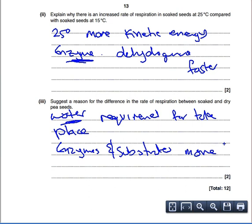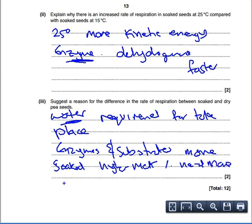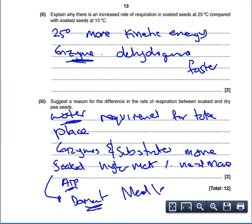Also consider the difference in metabolic state: soaked or germinating seeds have a higher metabolism and therefore need more ATP. Conversely, dry seeds are dormant and require less ATP.